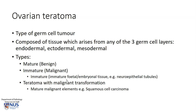Immature teratomas contain immature fetal or embryonal type tissue, for example neuroepithelial tubules, and these can be recognized microscopically. And then there are teratomas with malignant transformation, meaning the malignant elements are not immature but are actually mature tissues — for example, squamous cell carcinoma or thyroid carcinoma arising in an otherwise mature teratoma.